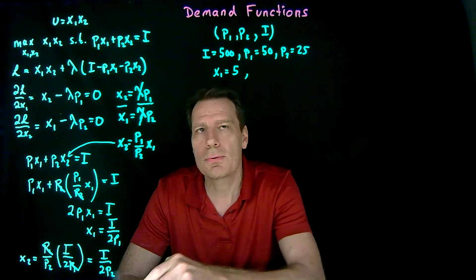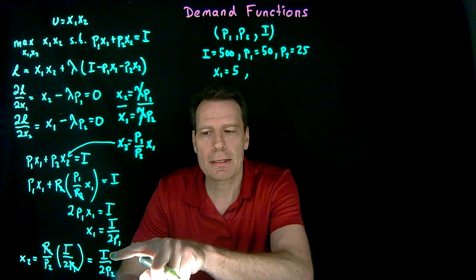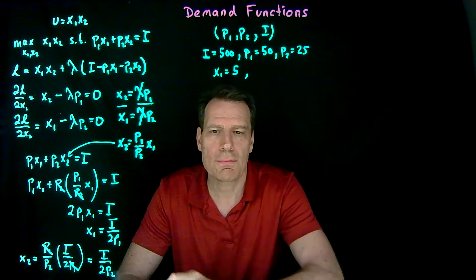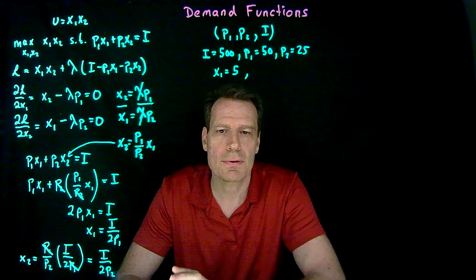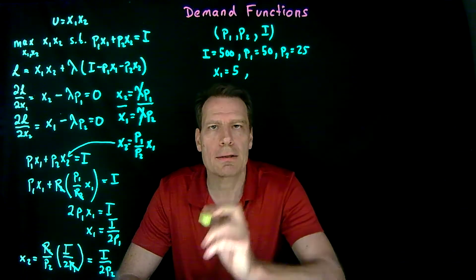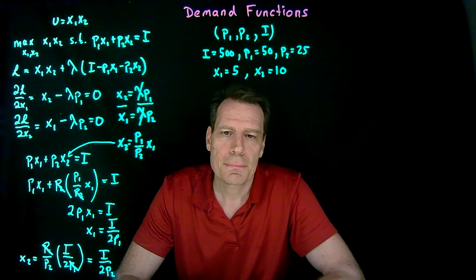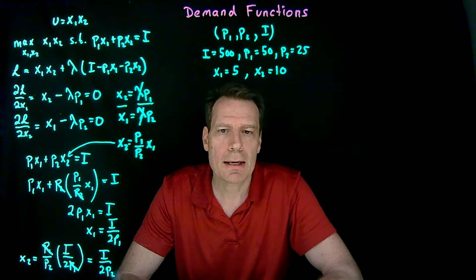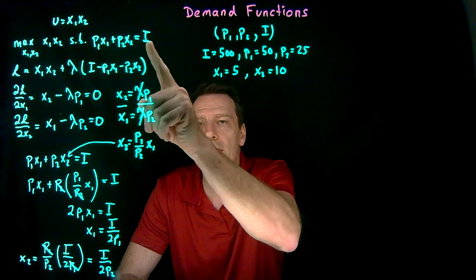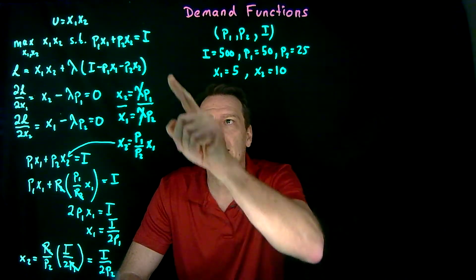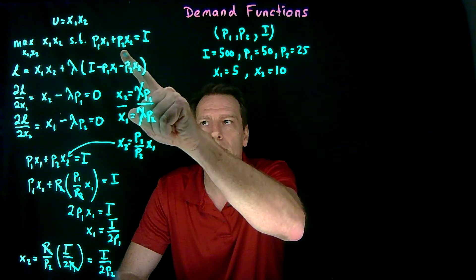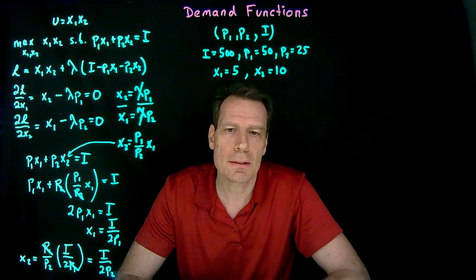And similarly, for x2, we divide 500, our income, divided by 2 times 25. 2 times 25 is 50. 500 divided by 50 gives us x2 equal to 10. That's exactly the consumption bundle we got when we solved this optimization problem with income set to 500, the price of good 2 to 25, and the price of good 1 to 50.